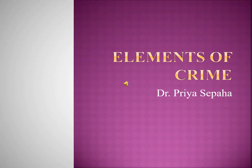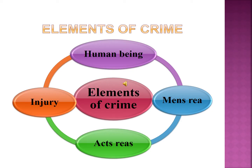My first topic is elements of crime. To establish criminal liability it is necessary to understand elements of crime. Crime can be broken down into elements which the prosecution must prove beyond a reasonable doubt. There are basically four elements of crime: the first one is human being, second mens rea, third actus reus, and fourth is injury.